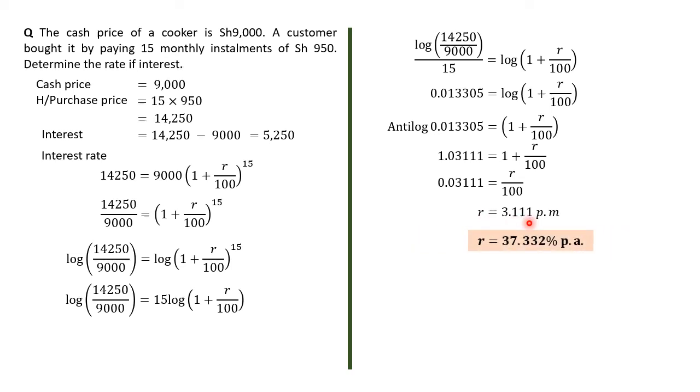But normally, we look for rate of interest in terms of a year. So, we don't normally use months, we use a year. Therefore, just multiply this by 12, you get the answer to be 37.332% per annum.